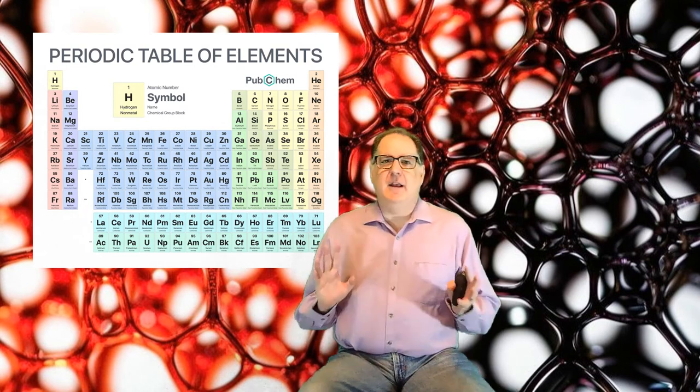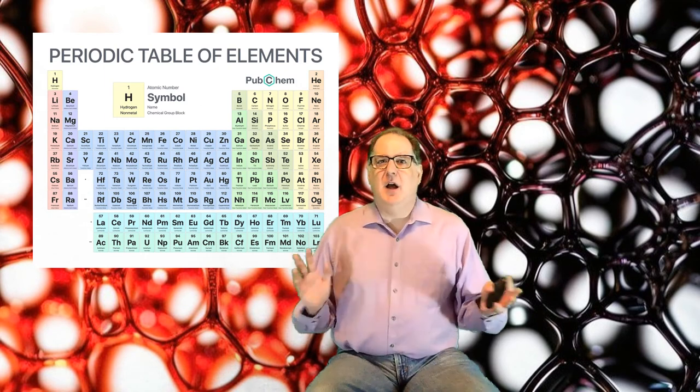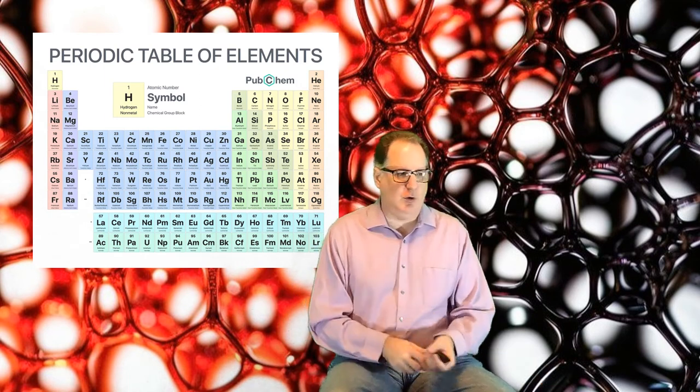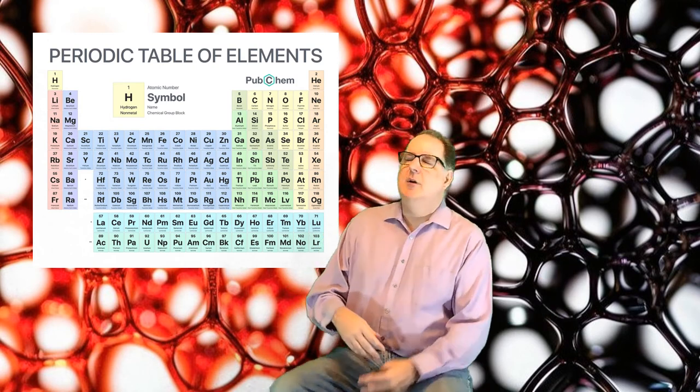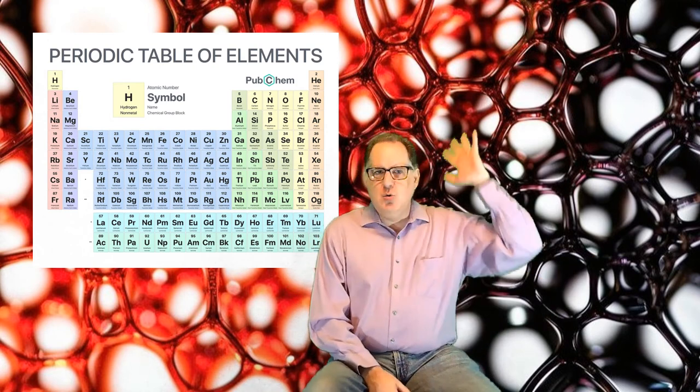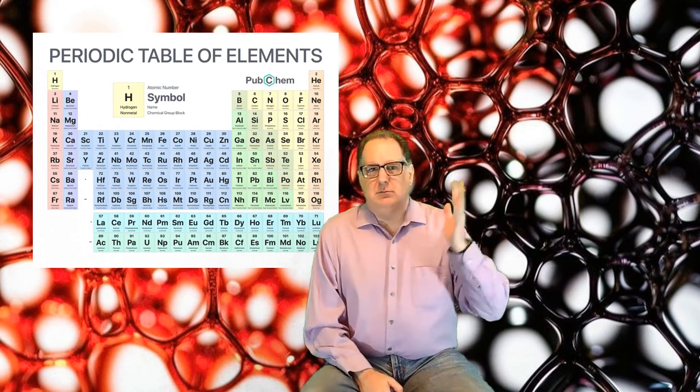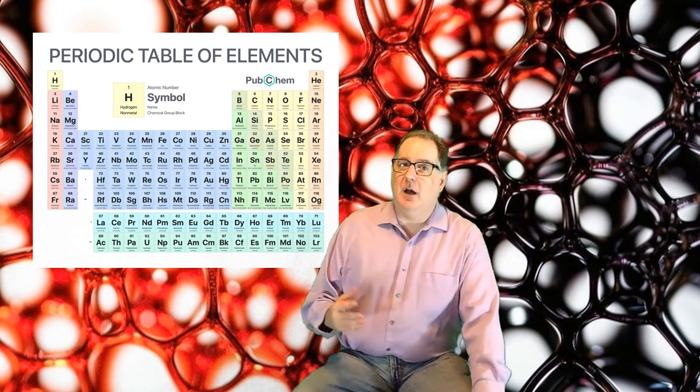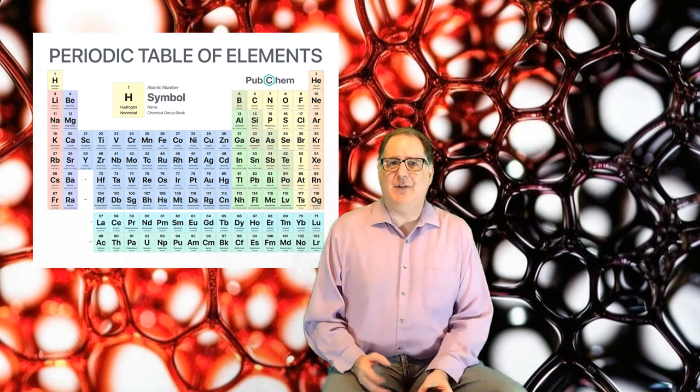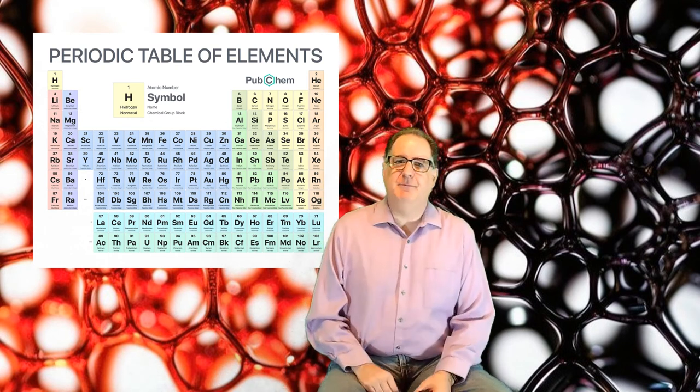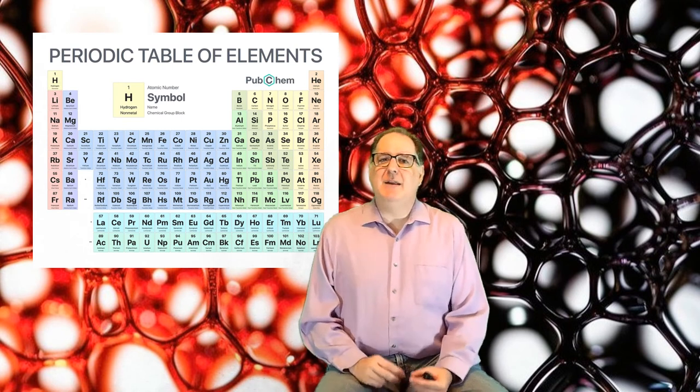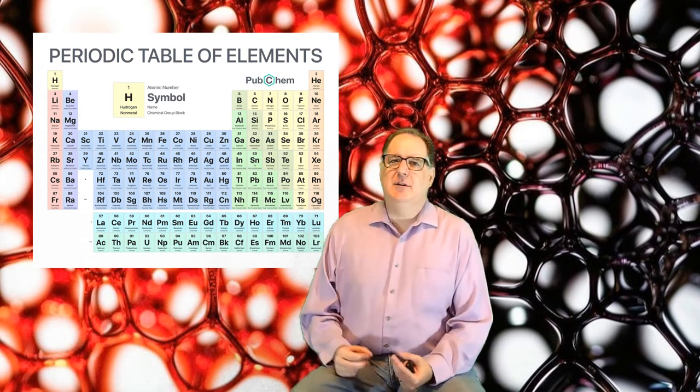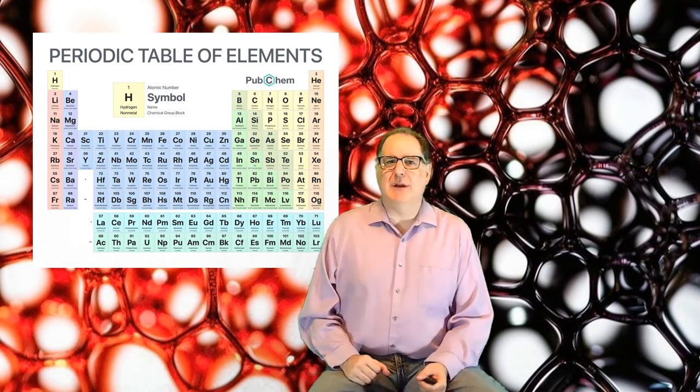Everything physical is made of atoms. You, me, this shirt, this controller, the lights, my house, the moon. Everything is made out of atoms, and there are 118 different kinds. The elements. Everything is made of atoms of these elements held together and doing chemical reactions.